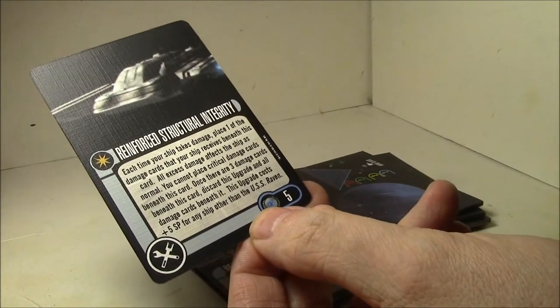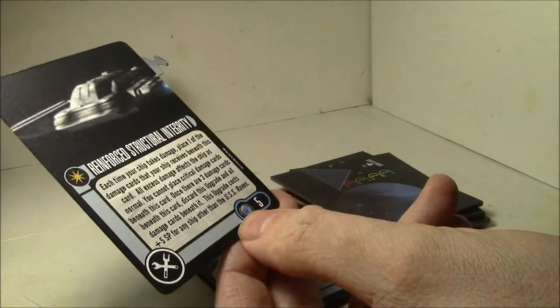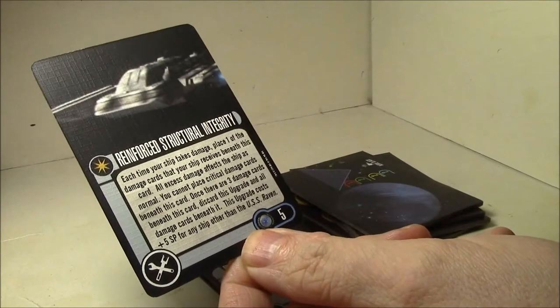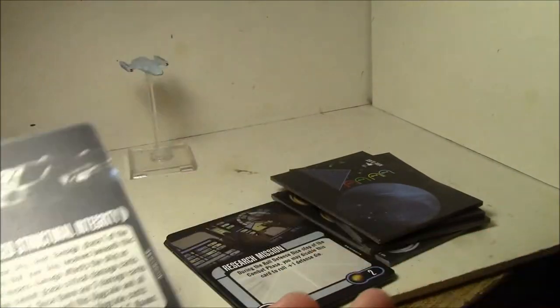It costs five points additional for any ship other than the USS Raven, so it'll be ten points on another ship to gain three hull points. It's a little spendy for what it does, I think, for anything other than the Raven, of course.